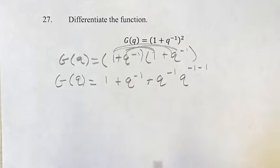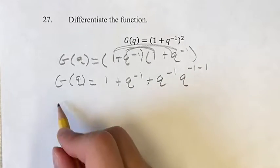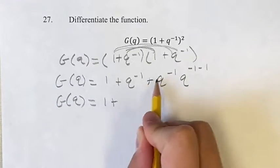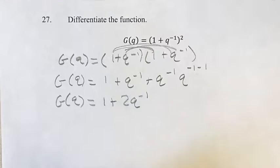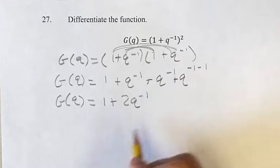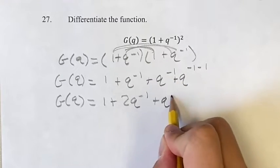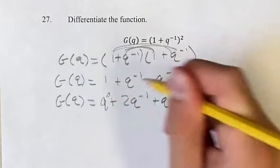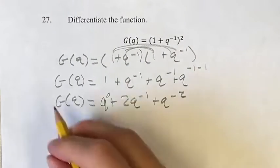You're multiplying them together, you add the exponents. So g of q equals 1 plus 2q to the negative 1 plus q to the negative 2. Now, if we think of 1 as q to the 0, we have three power functions, and we can find the derivative easily.